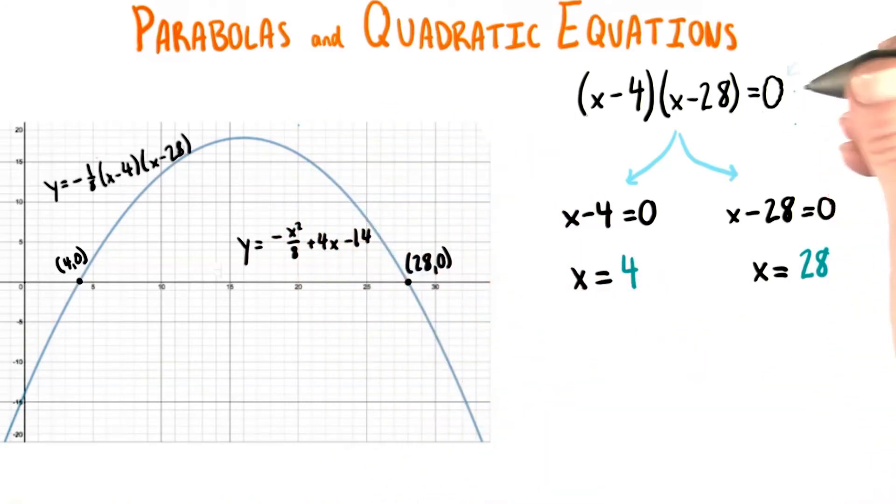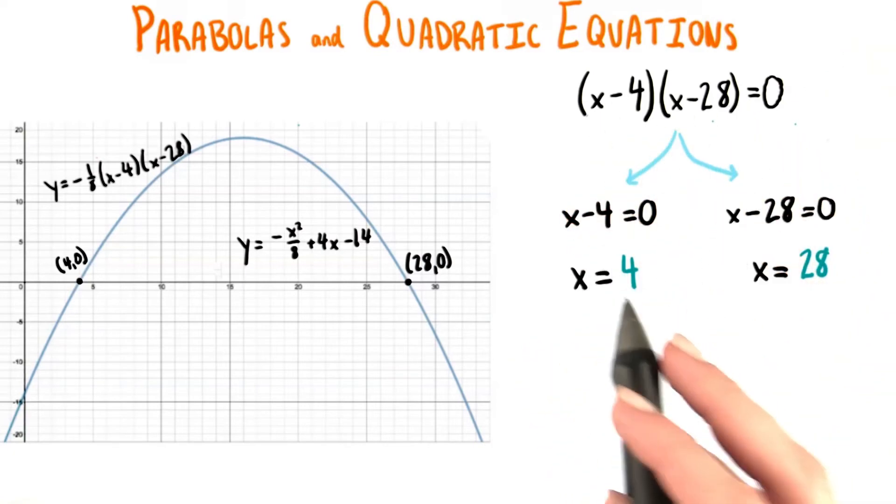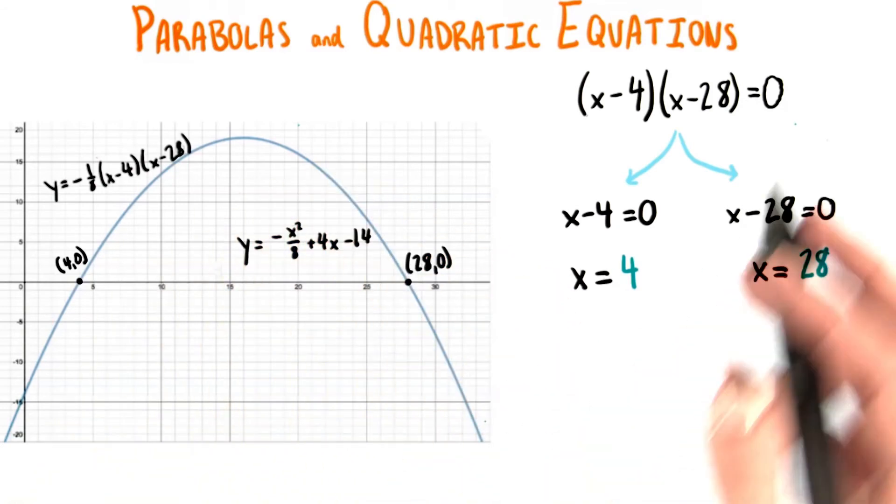Plugging in that value for y, or in other words, substituting in 0 in the place of y in the equation, we solve for x to get the corresponding x coordinates at the various points on the graph where the y coordinate is 0.